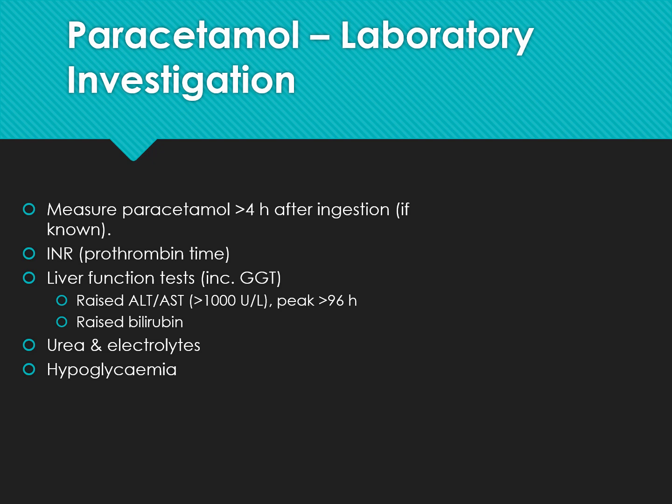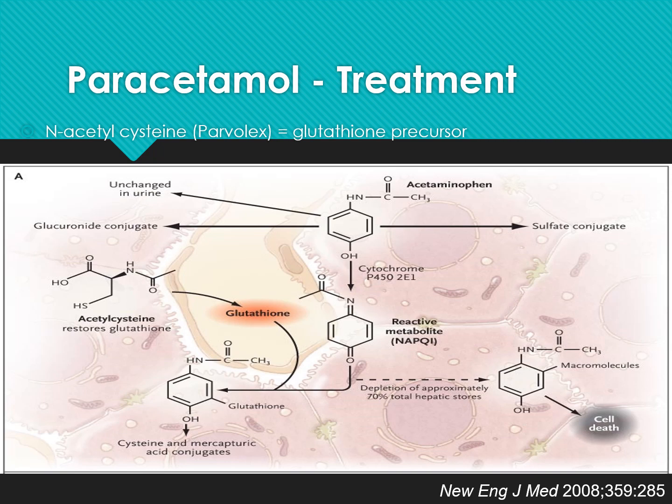In the laboratory, paracetamol should be measured greater than 4 hours after ingestion. You need to measure INR (prothrombin time), liver function tests including GGT, raised ALT, raised AST greater than 1000, peak greater than 96 hours, raised bilirubin, urea and electrolytes, and hypoglycaemia. Treatment for paracetamol poisoning involves N-acetylcysteine (NAC), a glutathione precursor.